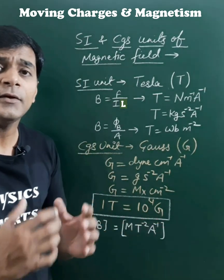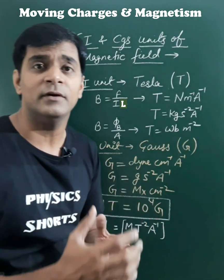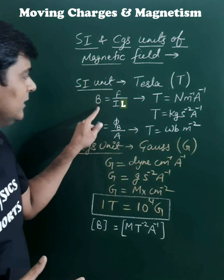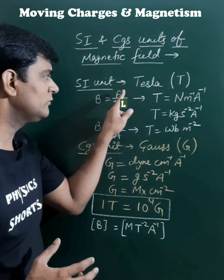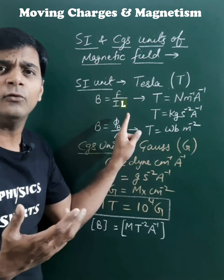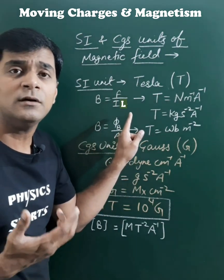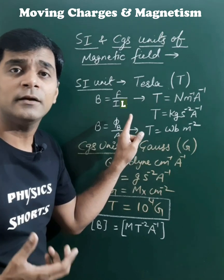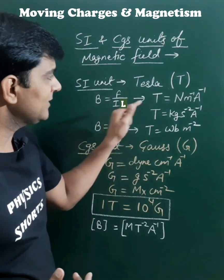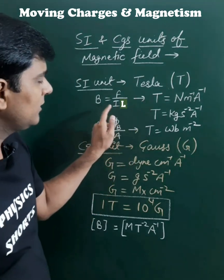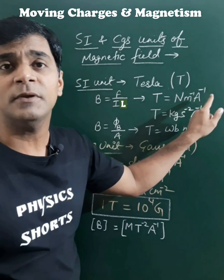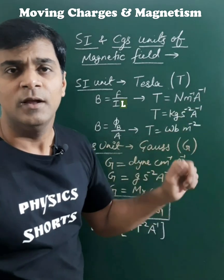Tesla can also be expressed in terms of kilograms using the relation B equals F upon IL, which is the force acting on a current-carrying conducting wire. So Tesla can also be written using this expression as Newton per meter per ampere.